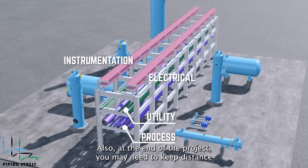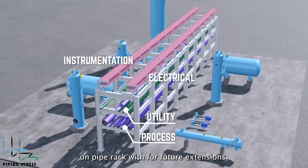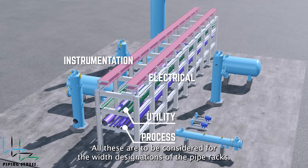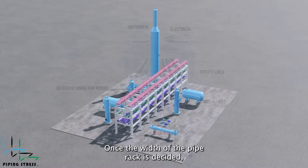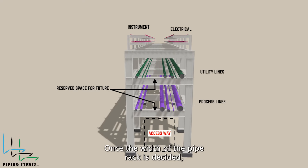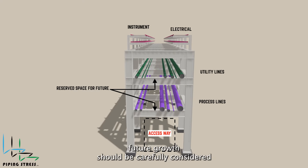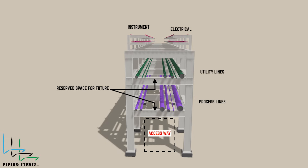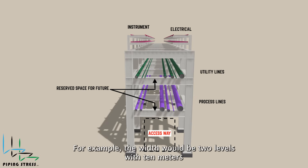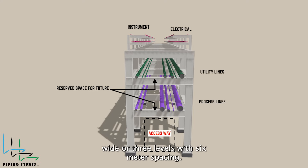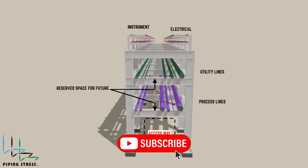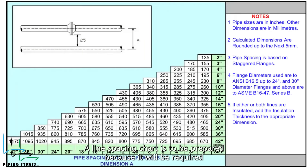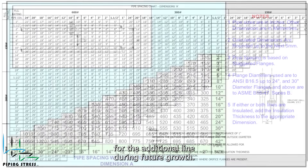Also, at the end of the project, you may need to keep distance on pipe rack width for future extensions. All these are to be considered for the width designations of the pipe racks. Once the width of the pipe rack is decided, future growth should be carefully considered in terms of civil and structural requirements and cost impact. For example, the width could be two levels with 10 meters wide or three levels with 6-meter spacing. A line spacing chart is to be prepared because it will be required for additional lines during future growth.